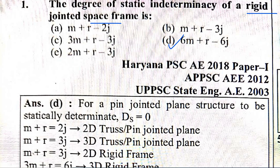For the first point — the pin jointed plane structure — the correct answer uses a different formula which we will now review.